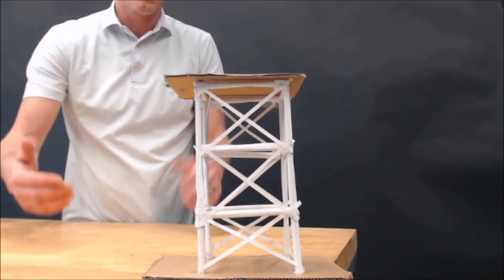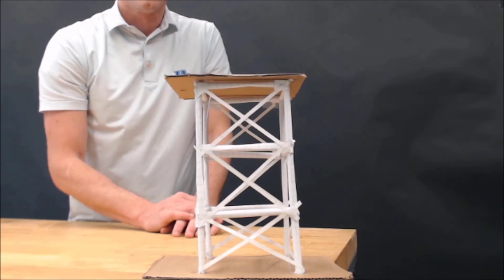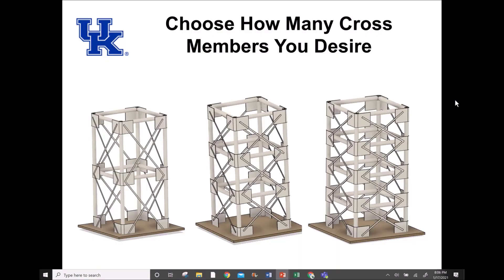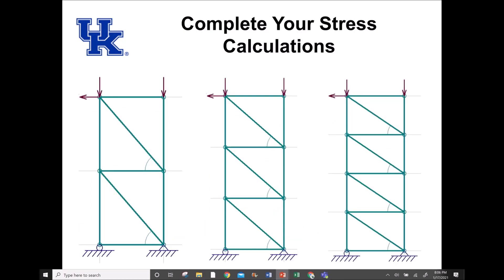We can then take our math and solve for the forces on each of our members. Here's a 3D model of each of those options. If we wanted to mathematically model them, we're going to look at one singular side and turn that into a free body diagram where we have a pin support down here and a roller support over here.